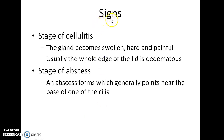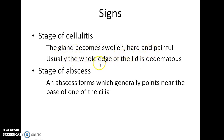There are two stages in hordeolum externum: the stage of cellulitis and the stage of abscess. In the stage of cellulitis, the gland becomes swollen, hard, and painful, and usually the whole edge of the lid is edematous. In the stage of abscess, an abscess forms which generally points near the base of one of the cilia.